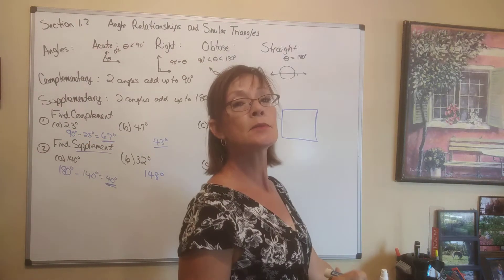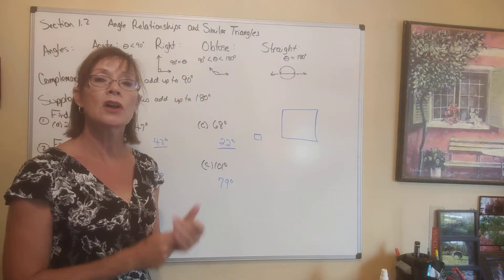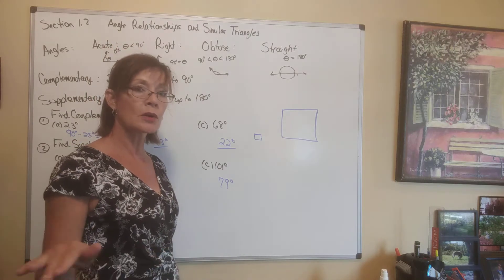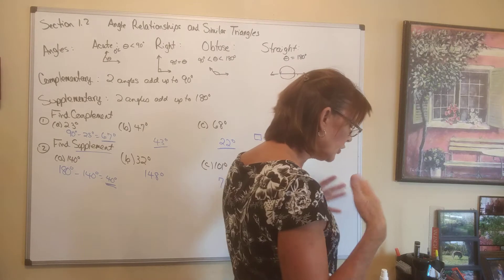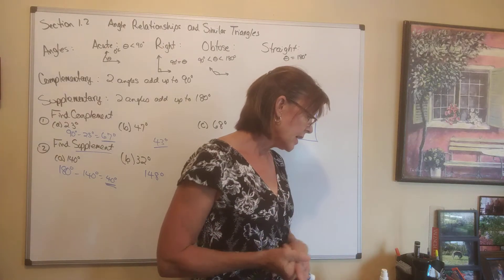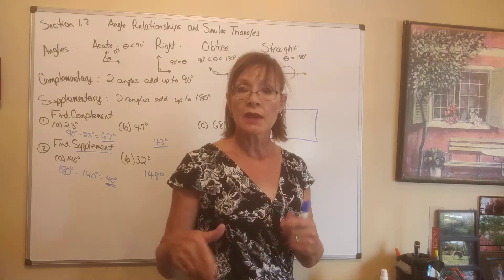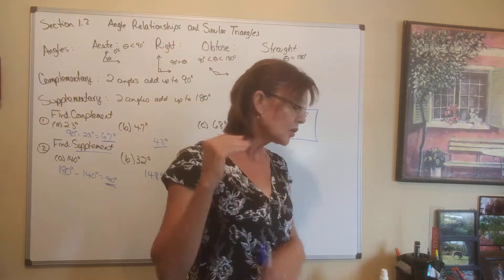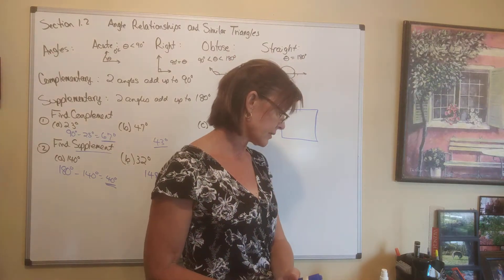Figures that are the same shape and the same size are called congruent — you may have heard that word before. Now we have this big theorem, Euclid's theorem. It says: if two triangles are similar — meaning the same shape but not necessarily the same size — then their corresponding sides are proportional to each other.